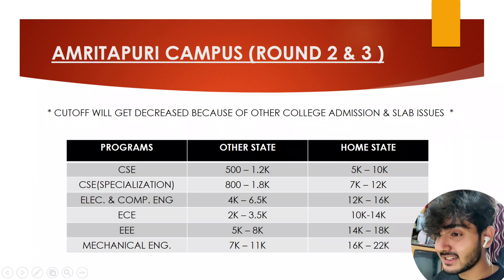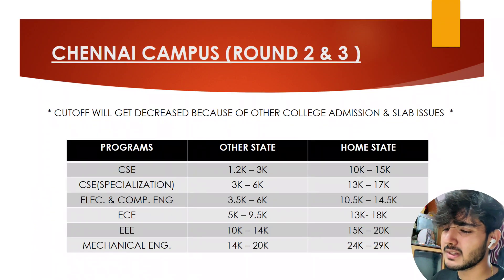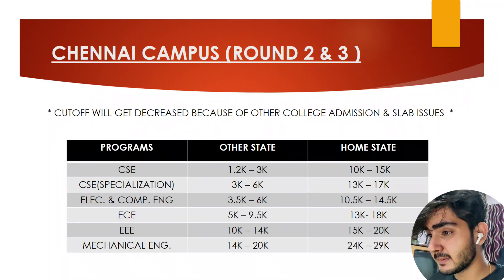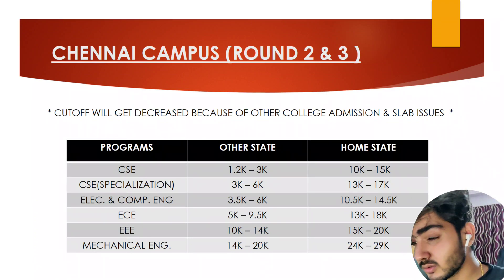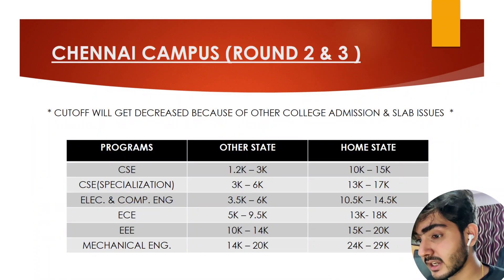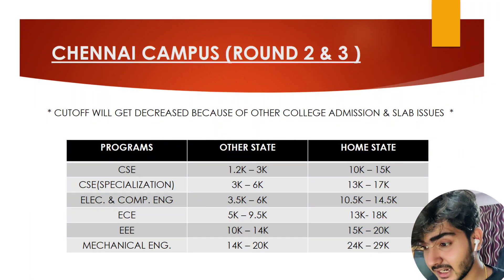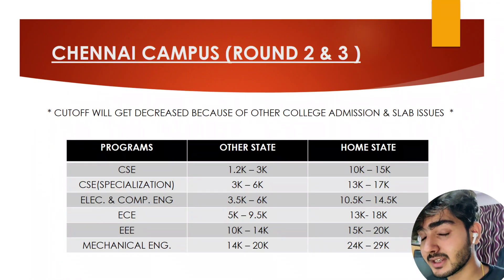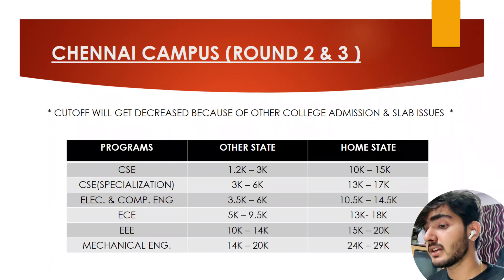The last campus is the Chennai campus, which I don't recommend — except for Computer Science. For Computer Science, other-state rank is 2,100 to 3,000. For CSE specializations, it is 3,000 to 6,000. For Electronics and Computer Engineering, it is 3,500 to 6,000. For EC, it is 5,000 to 9,500. For Triple EE, it is 10,000 to 14,000. For Mechanical Engineering, it is 14,000 to 20,000. Home-state ranks are shown on the side.